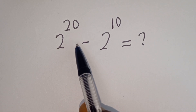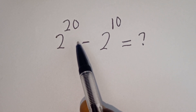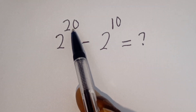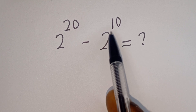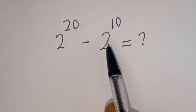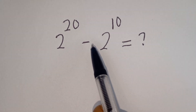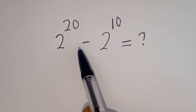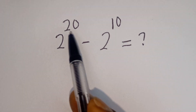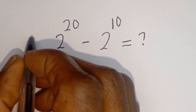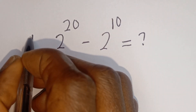Hello, how to simplify this nice math problem without using a calculator? 2 to the power of 20 minus 2 to the power of 10 is equal to what? We are going to solve two questions here, but let's consider this first. Let's call this question number one.